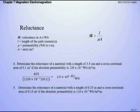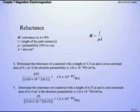Try this one: determine the reluctance of a material with length 0.25 m and cross-sectional area 0.15 m² if the absolute permeability is 110 × 10⁻⁷. No conversions needed here — everything is already in meters. Plug directly into R = L / (μ × A) and you get 1.5 × 10⁵ turns per meter. Those are our reluctance calculations.